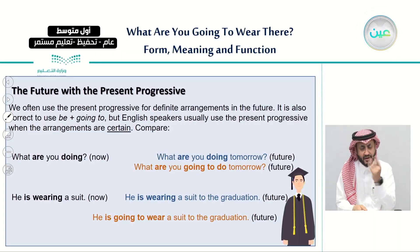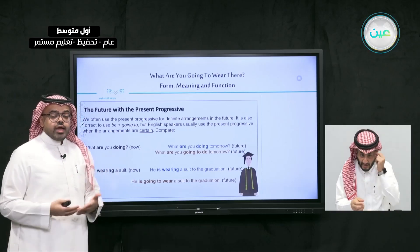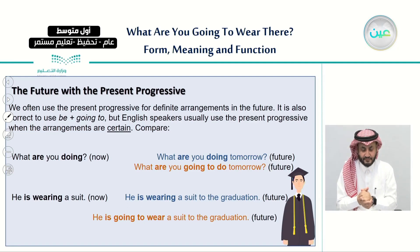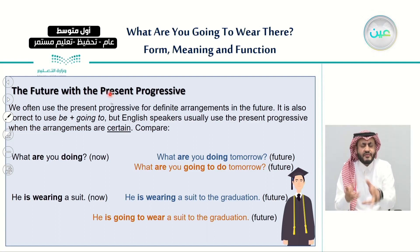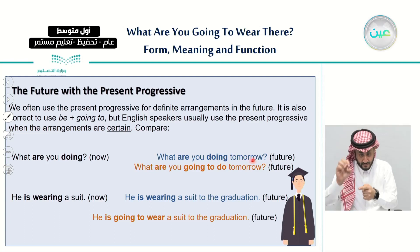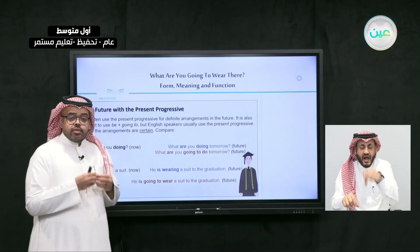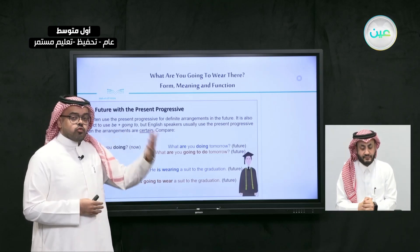Let's differentiate between when we use the present progressive for actions happening right now versus actions in the future. For actions happening right now: 'What are you doing?' But for the future, we add a time expression: 'What are you doing tomorrow?' We can also say: 'What are you going to do tomorrow?' using 'be going to.'